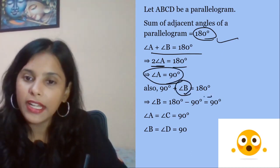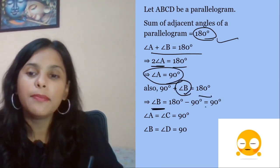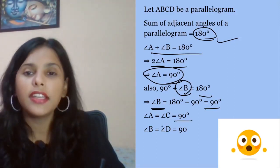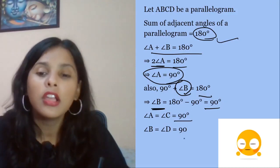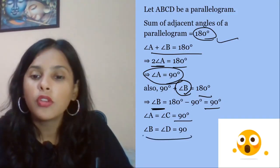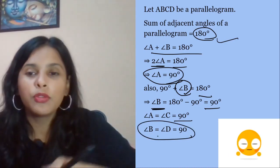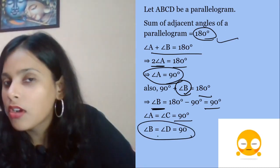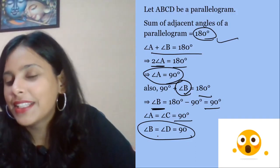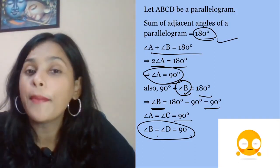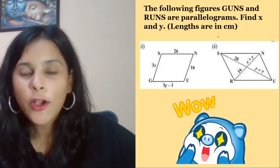So b is also 90. We know that angle a equals angle c, which is 90 degrees. And angle b equals angle d, which is 90 degrees. And which parallelogram is this? This is a square or rectangle.